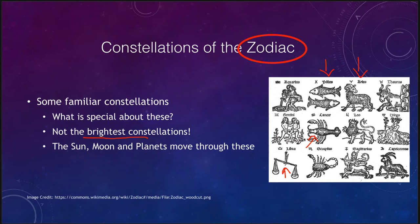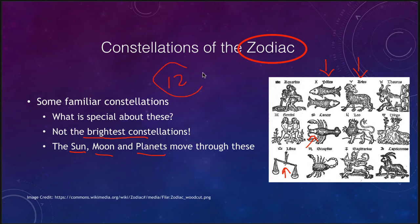Others might have a couple of bright stars, but they were important not because of the stars they were made up of, but because of where they were located. These are the constellations that the sun, the moon, and the planets will move through over the course of the year. So they became important to astrology because they were the constellations where you would find the sun, moon, and planets — all within the twelve constellations of the zodiac.